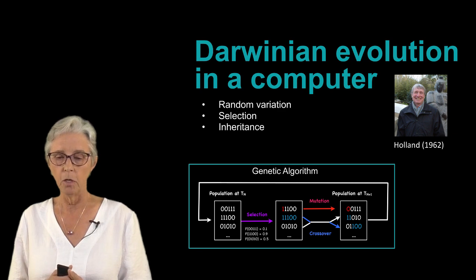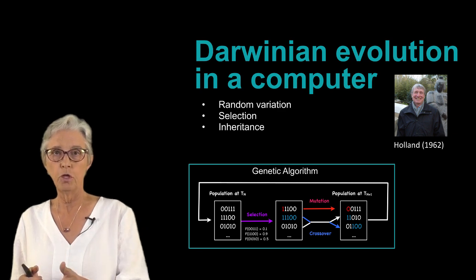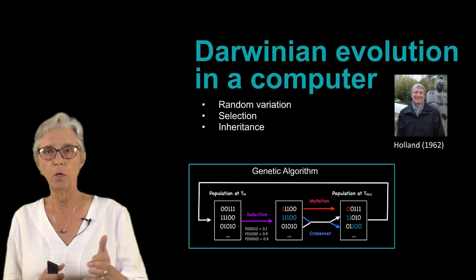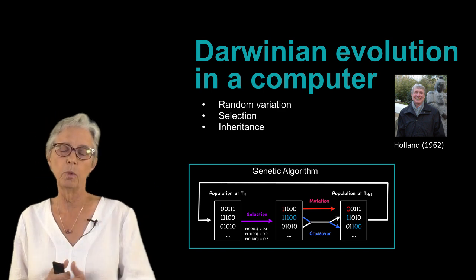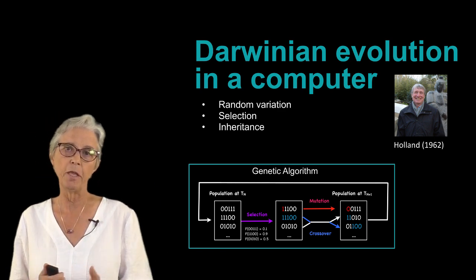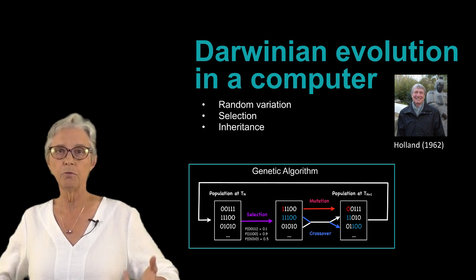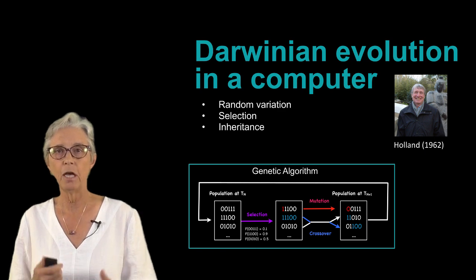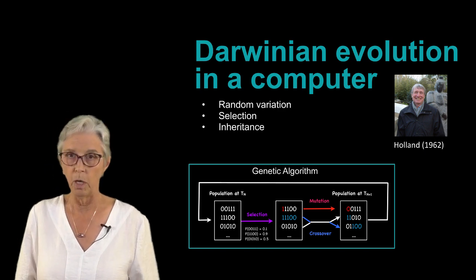So now in the third panel we have the true new generation—generation t plus one—and we then have to repeat the cycle and evaluate those using the fitness function, do new selection, introduce new mutations and crossovers, and that is how the evolutionary process runs.